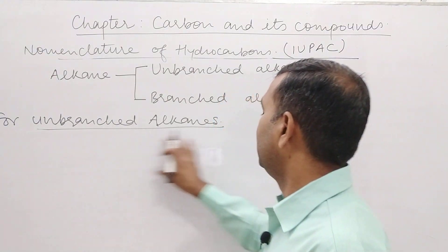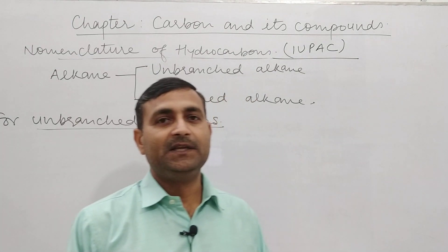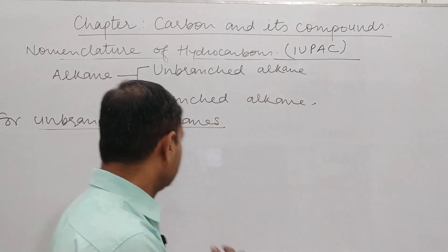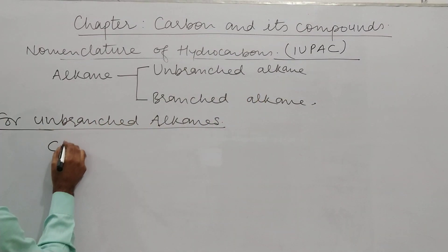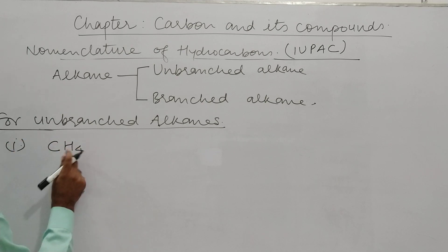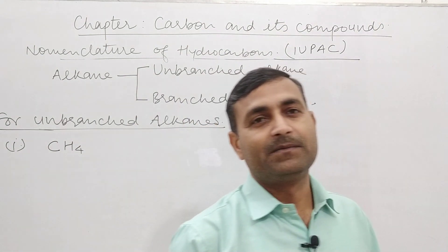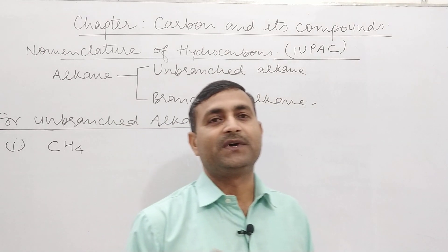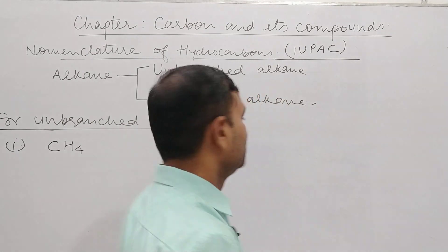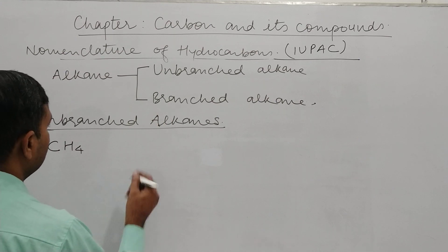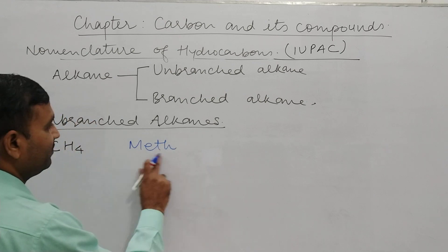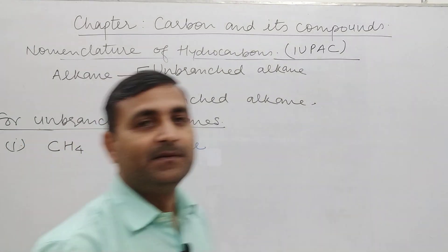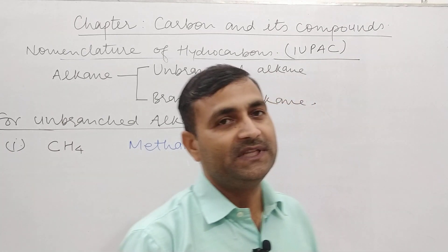Unbranched alkanes के case में — सबसे simple example है CH4. इसका carbon number है 1, तो word root होगा 'meth'. यह alkane को belong करता है क्योंकि it follows the general formula CnH2n+2. So suffix 'ane' लगा देंगे — इसका नाम हो जाएगा methane.